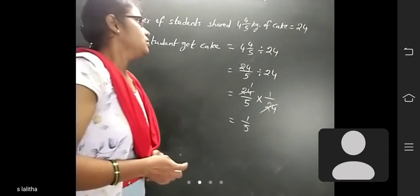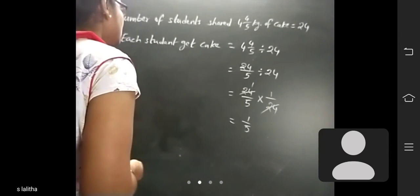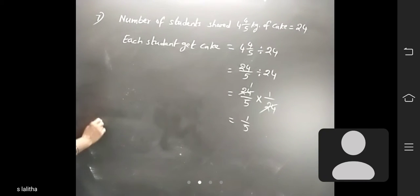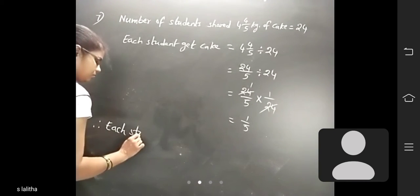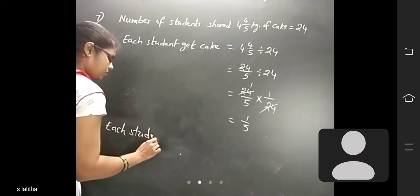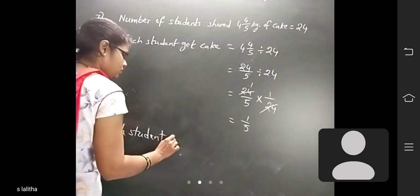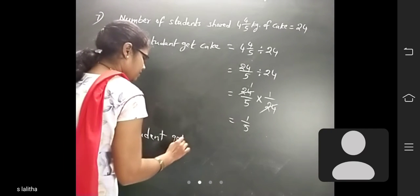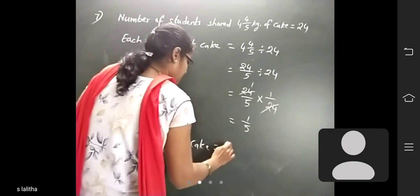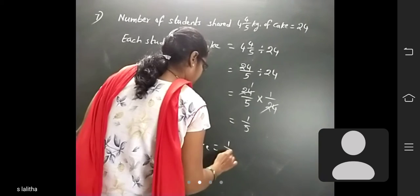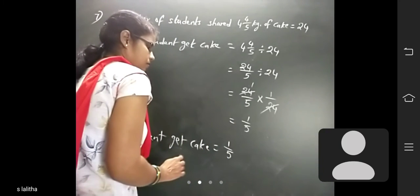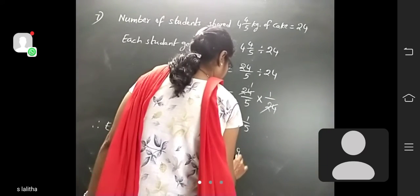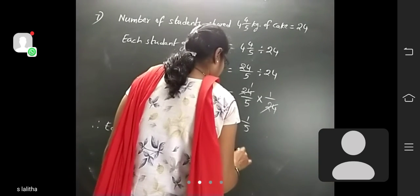So how much does each student get? 1 by 5 part. Therefore, each student gets cake equal to 1 by 5 kg.